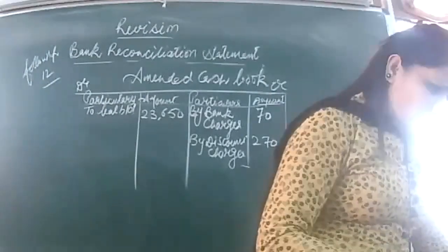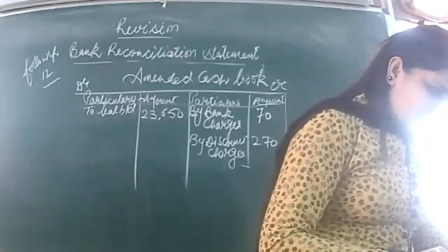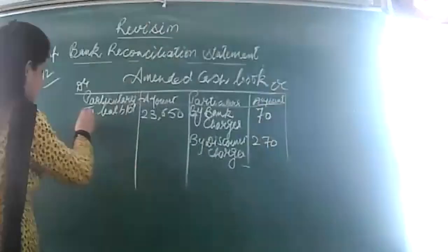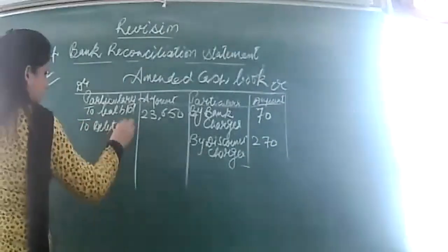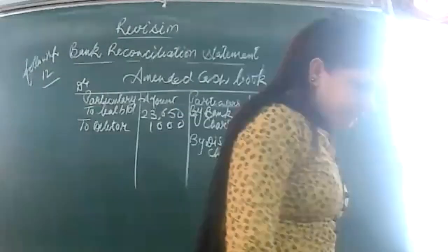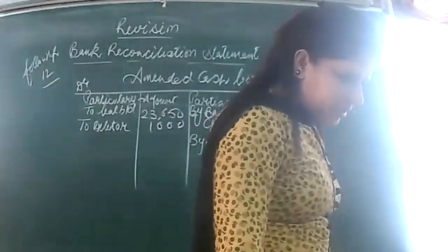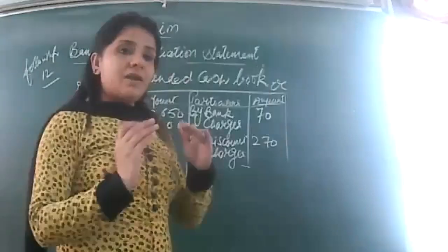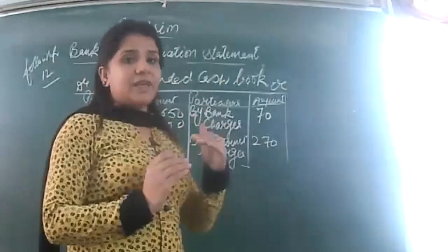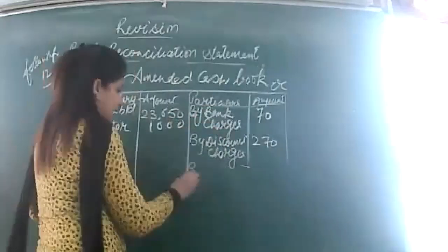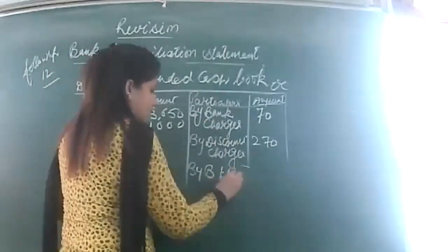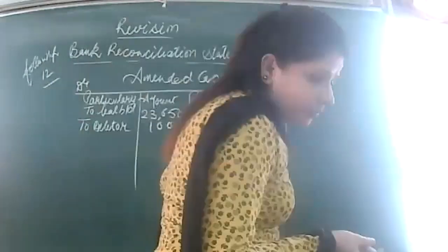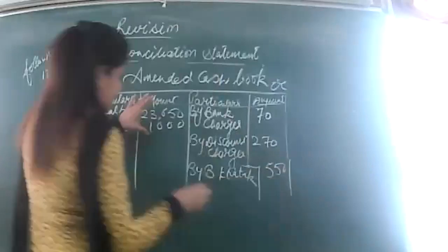A check that was already recorded in the cash book — a debtor has credited the account, but no entry has been made in the cash book. So we are going to record the debtor amount. Also, no entry has been made in the cash book to record the dishonour of a check of rupees 550 from B. Khatak. When a check is dishonoured, the entry should be 'B. Khatak account debit, bank credit.' Since the entry was not made, I will write 'by B. Khatak' on the credit side.